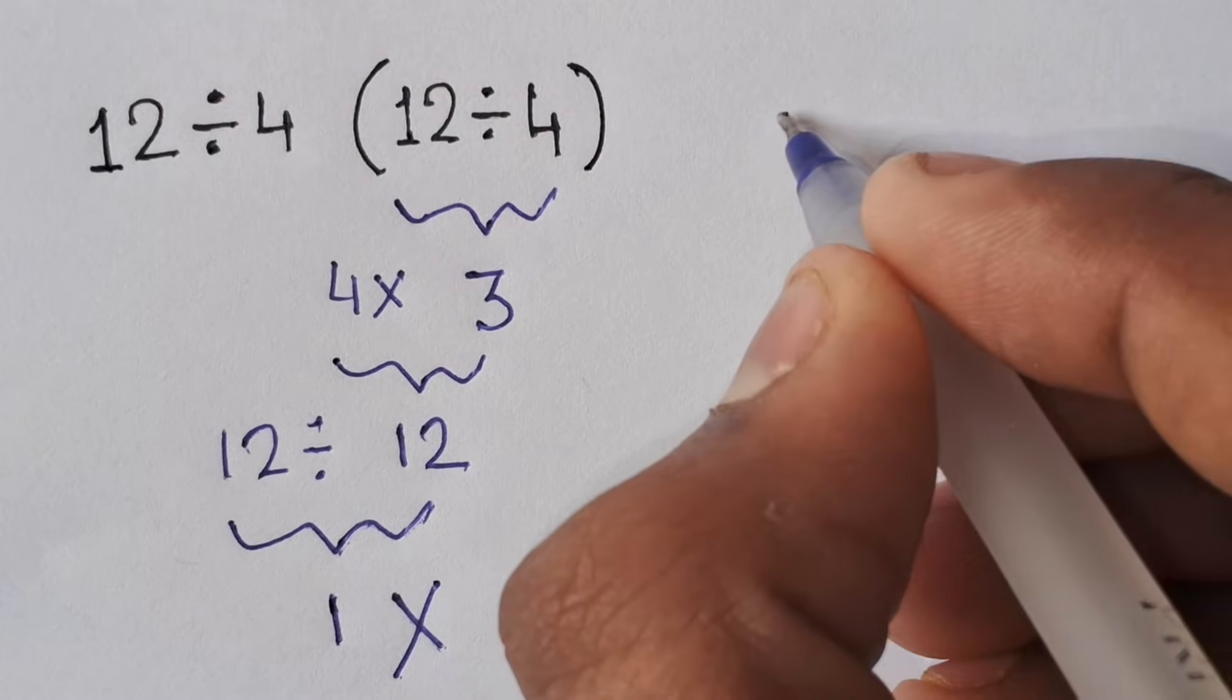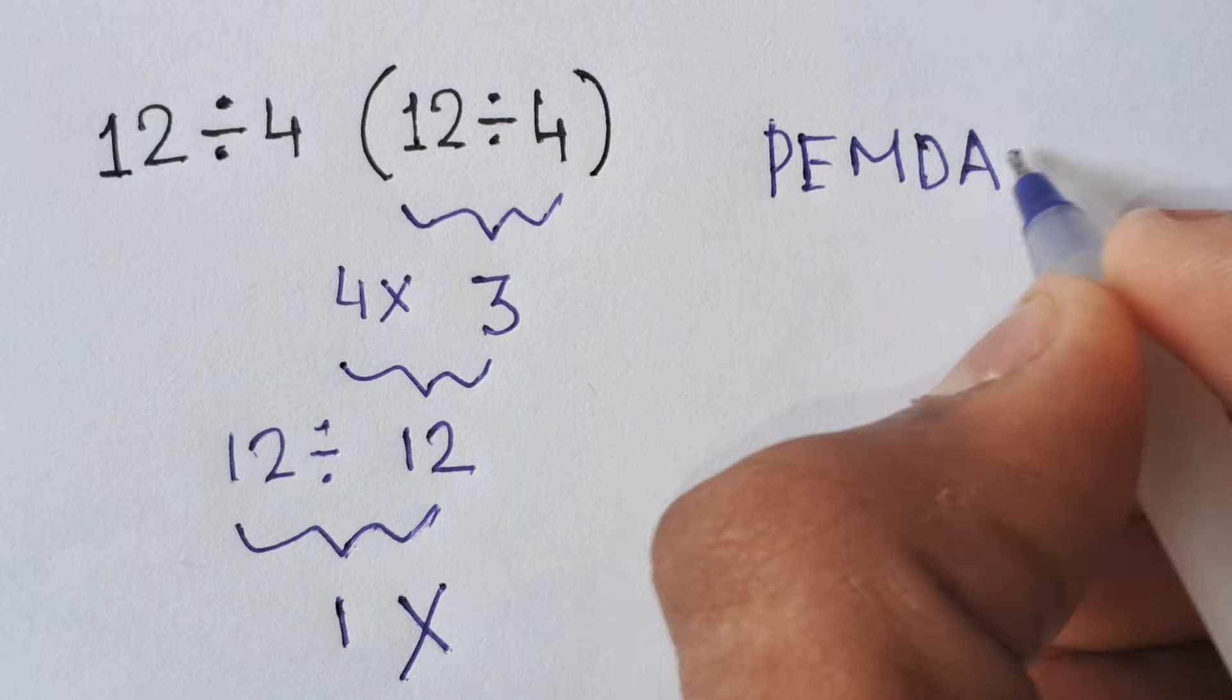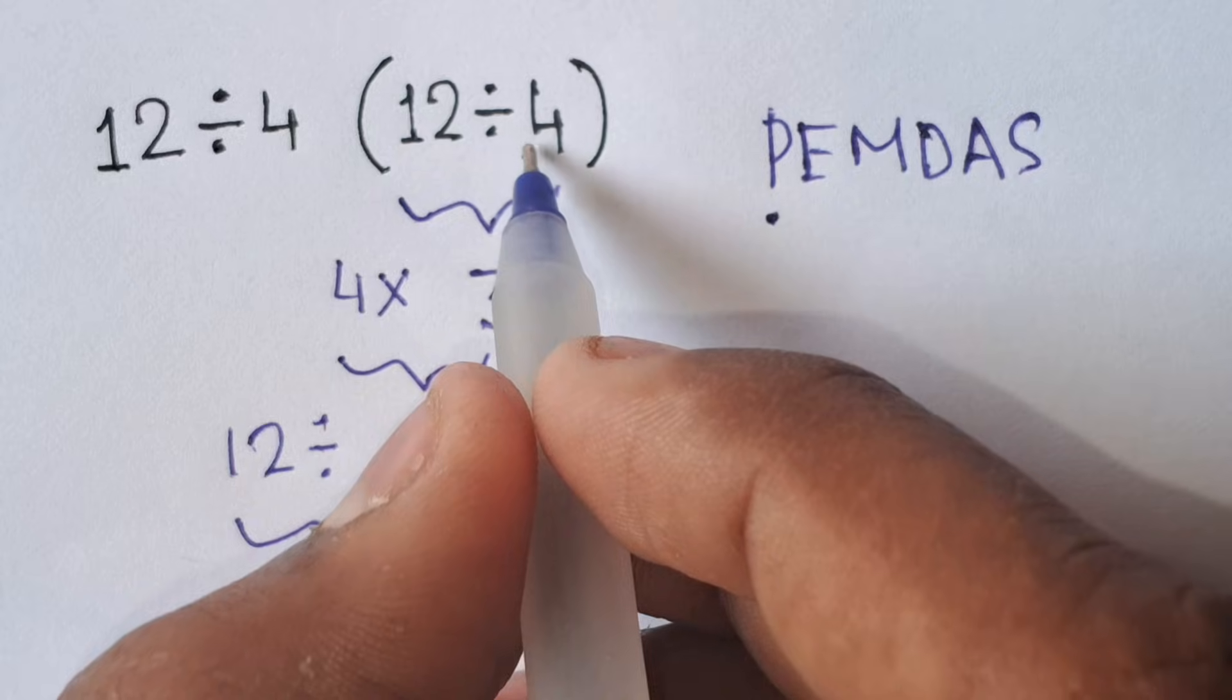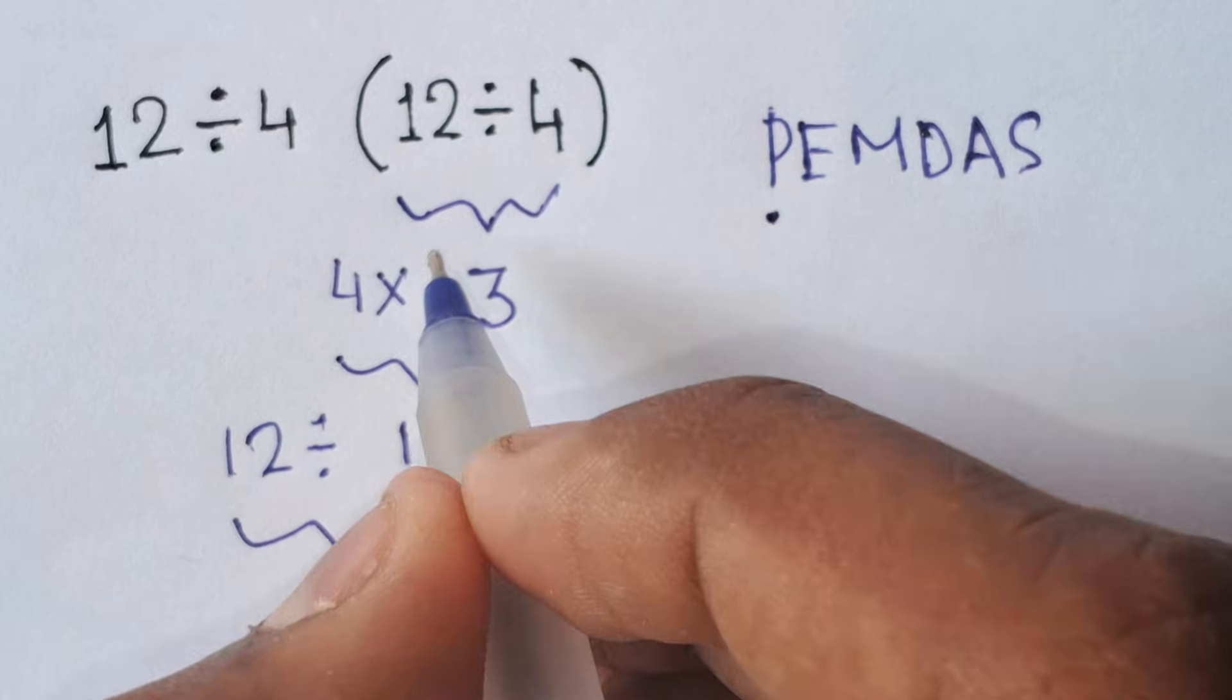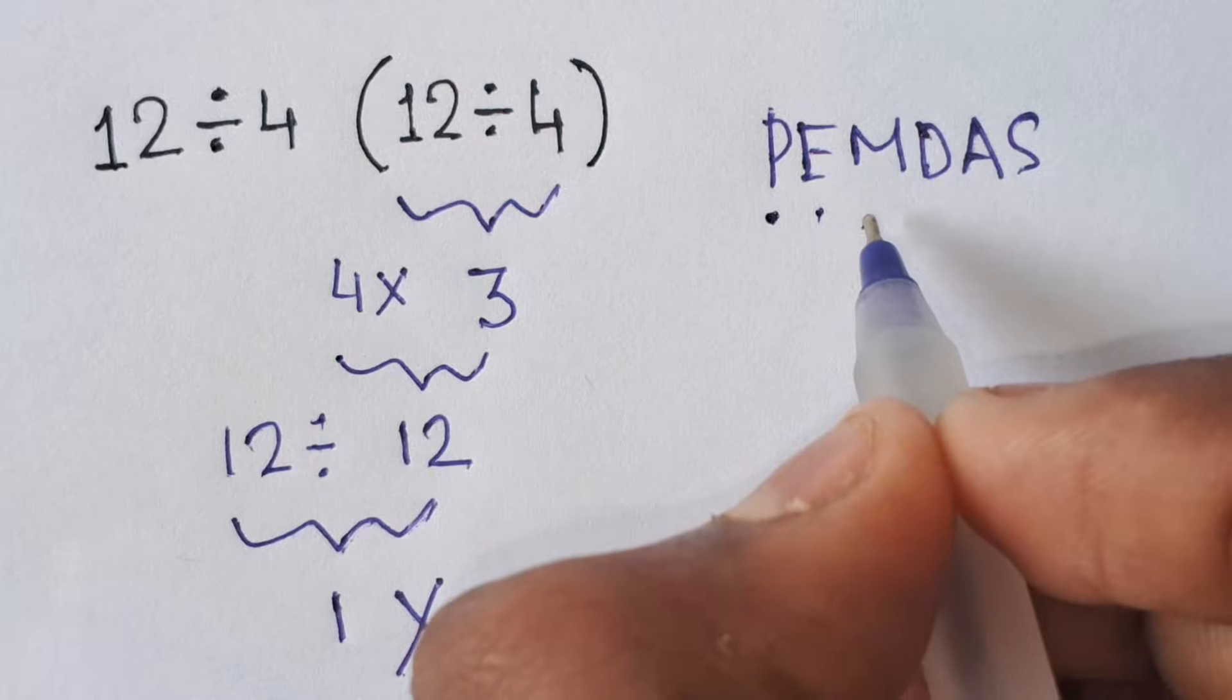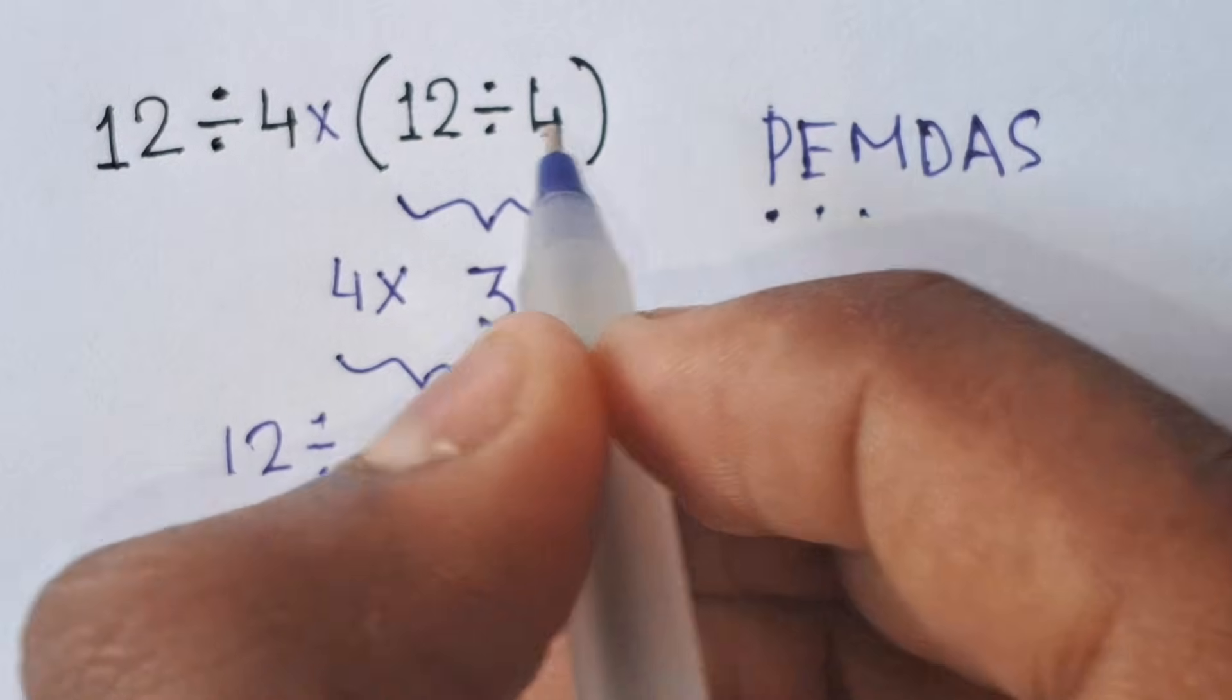according to the order of operations, which is called PEMDAS. P stands for parentheses - here in the question we have 12 divided by 4 inside the parentheses. E stands for exponents - here we have no exponents. M stands for multiplication - here we have one multiplication, which is 4 times 12 divided by 4.